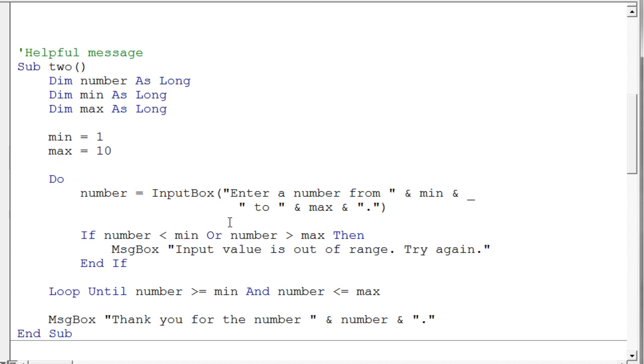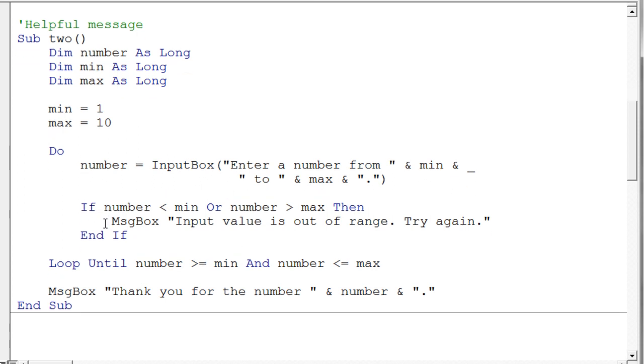This piece of code is essentially identical to the prior piece with one small difference. You'll notice that we have the same declarations, the same initialization, we have the same do, and we also have the same input statement. And down here we have the same exact loop, until, and then the message box.